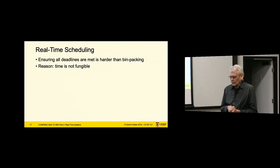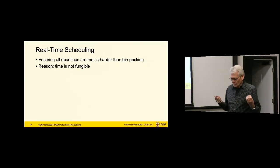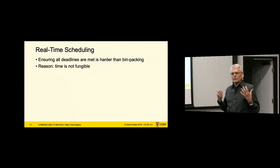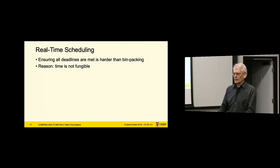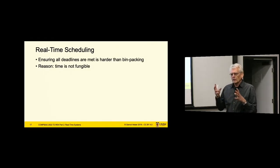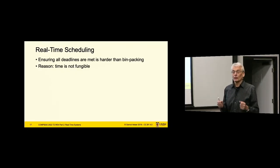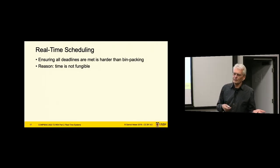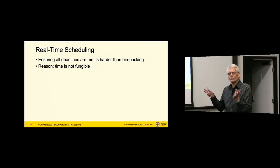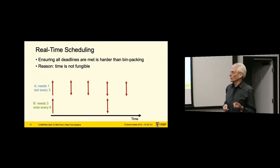What makes real-time scheduling a challenge is the fact that time is not fungible. When we do other resource management in an OS, we typically deal with spatial resources — for example, memory management, assigning physical memory frames to different processes. That job is much easier because these frames are, to a very good approximation, fungible: one frame is as good as another. That's not the case with time. For best-effort systems, time is fungible — it doesn't matter which interval of time some process gets. Whereas for real-time systems, it definitely is not. This is where the challenge comes in.